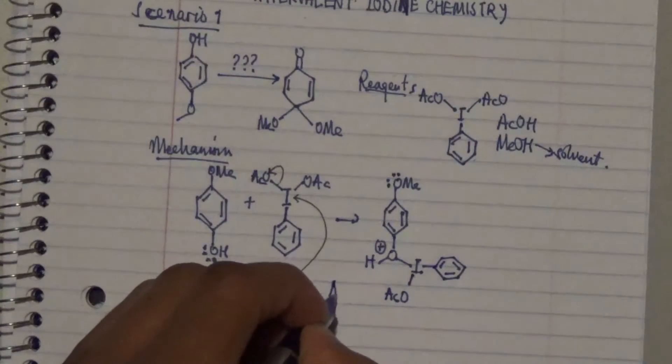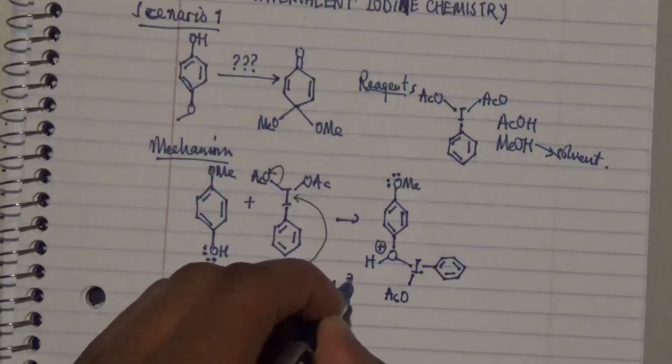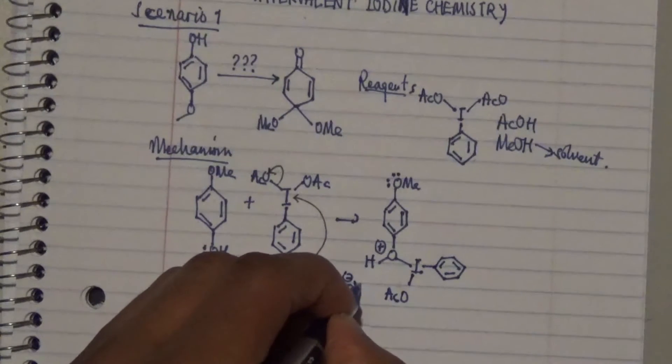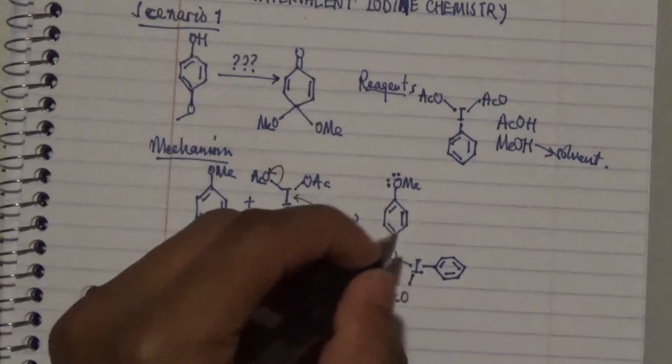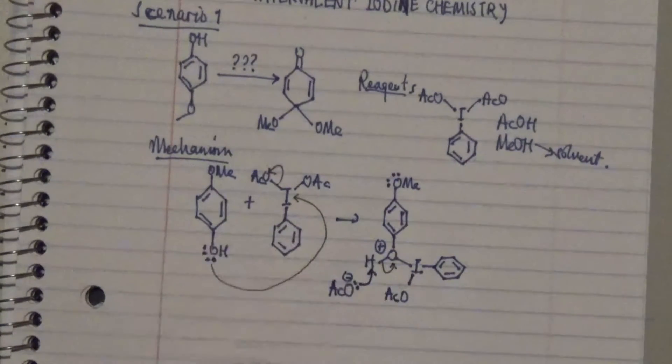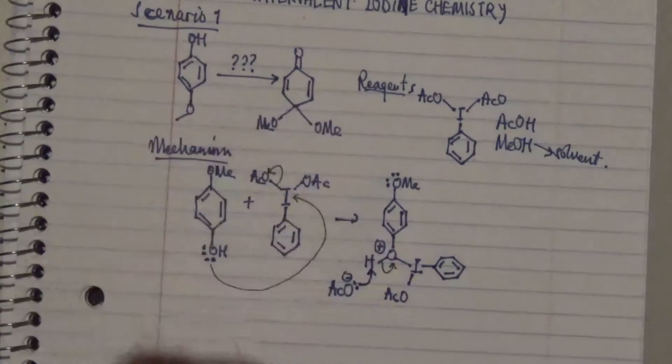Then the iodide is placed over here and OAc is left at the other side of the iodide. Once this is kicked off, this particular compound forms a negative charge, and this actually extracts this particular hydrogen.